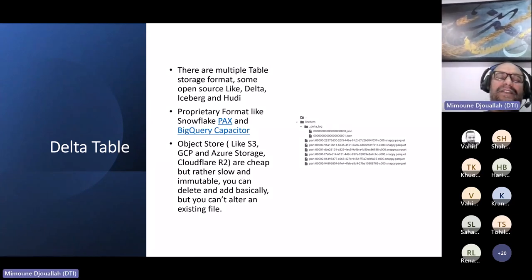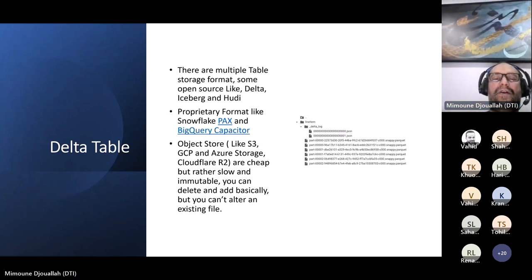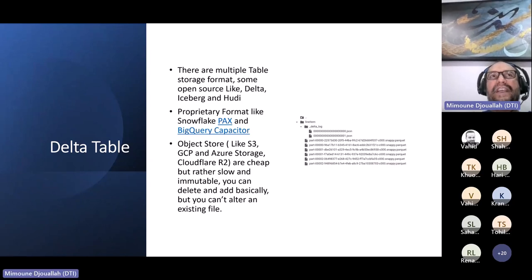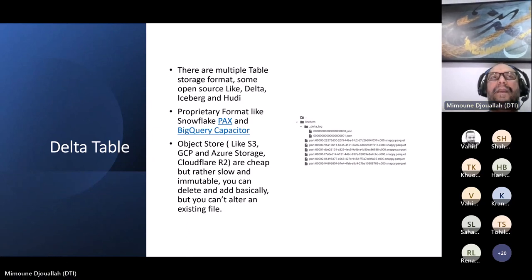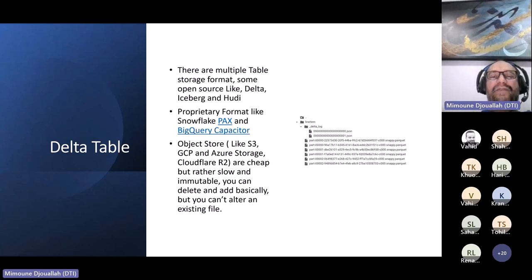The one thing you need to learn about Delta tables: when you save a file to disk you can open it, modify it, and save it. This is not how object storage works. OneLake uses Azure object storage — very cheap but with slower throughput compared to SSD. Crucially, you cannot modify files. All you can do is add or delete. When you 'save' it creates another copy, but you can never alter an existing file.